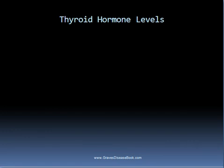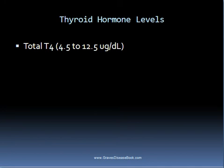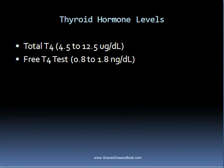I'd like to discuss some of the different thyroid hormone levels. Total T4 is the total amount of thyroxin in the body, and is usually increased in people with hyperthyroidism and Graves' disease. It is not as accurate as measuring the free level of thyroid hormone. Free T4 measures the free form of the hormone, which is more accurate of the body's thyroid hormone levels. This test is typically high in people with hyperthyroidism and Graves' disease, although it is negative in people with subclinical hyperthyroidism.